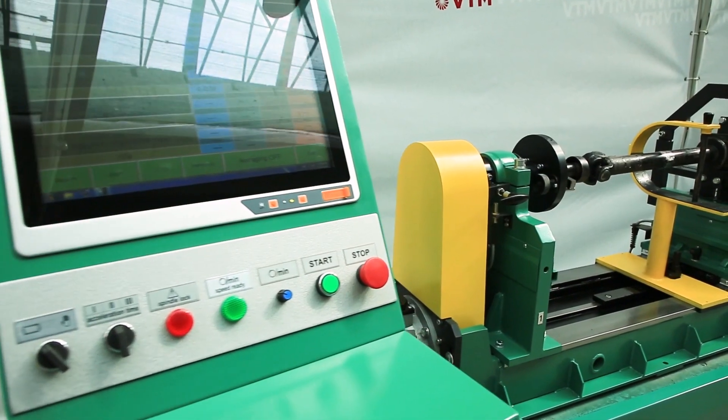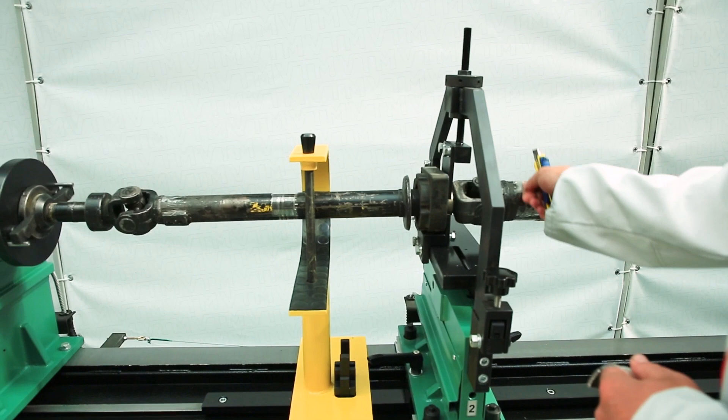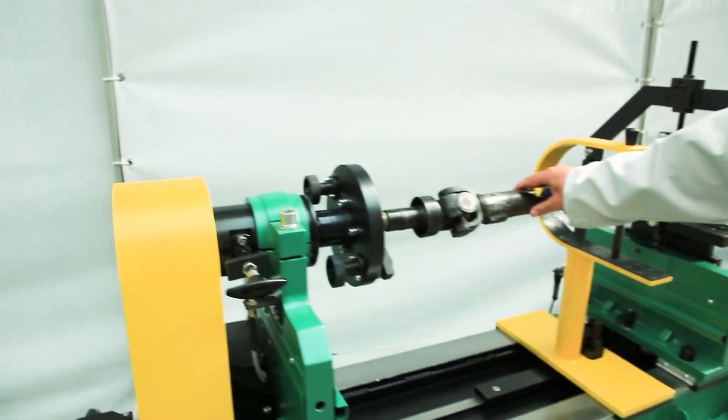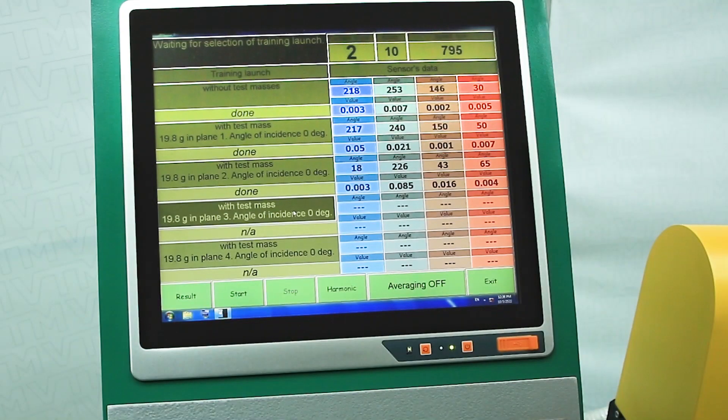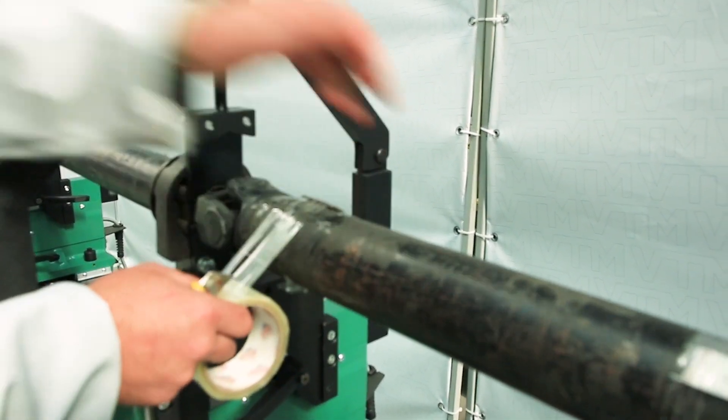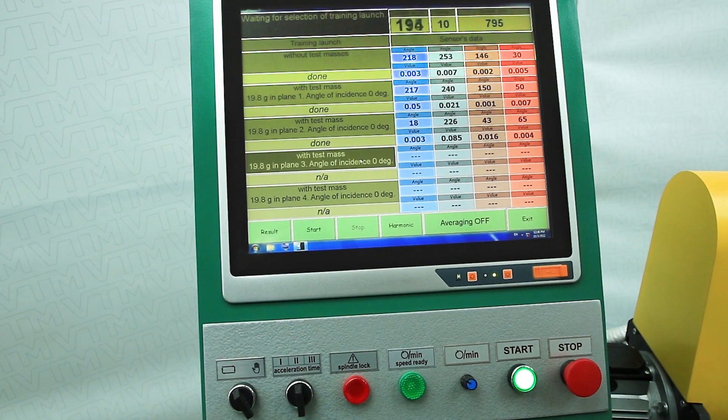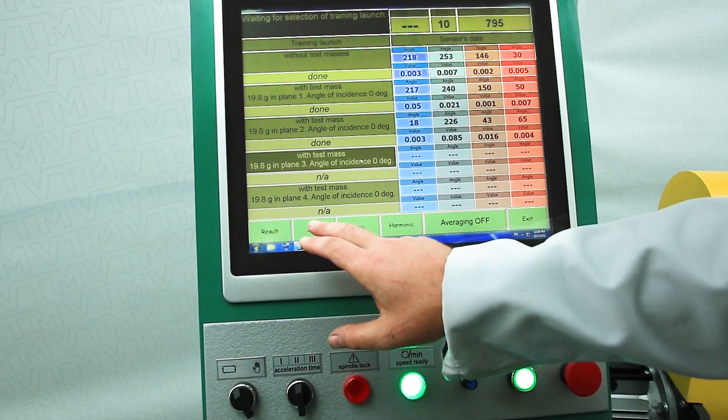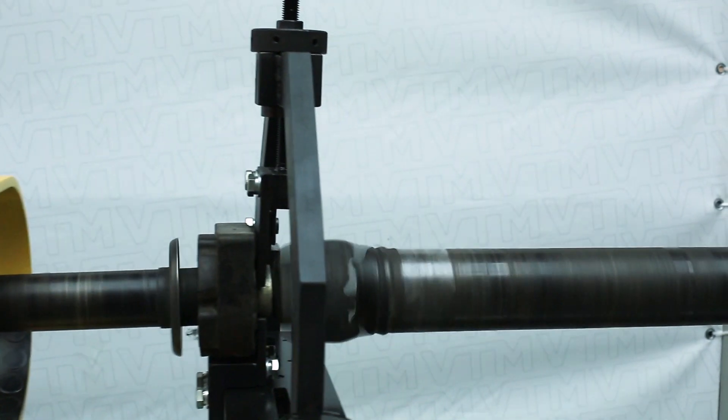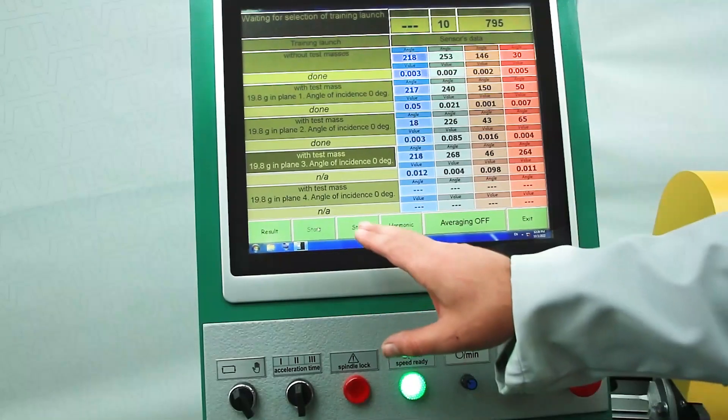Start with plane number three. We remove the weight from the second plane. The weight was removed, the rotor was brought under the zero angle. And we install the load vertically on the plane number three from above. Press start rotation and start measurement. Then stop the measurement and stop the rotation.